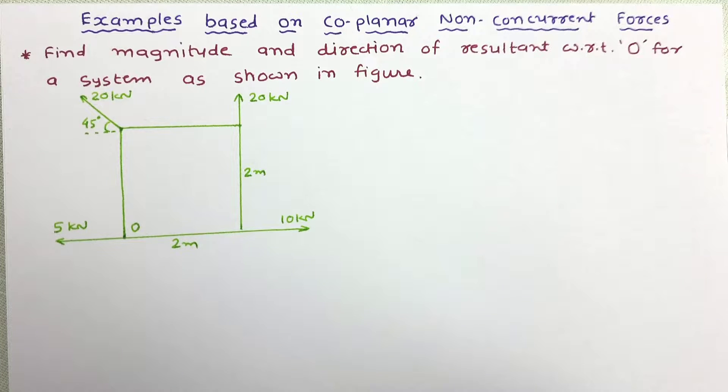This problem is given to us. I will read the data first. Find magnitude and direction of resultant with respect to O for a system as shown in figure. In this figure we have given a system of forces which contain four different forces and we are asked to determine magnitude and direction of resultant with respect to point O.